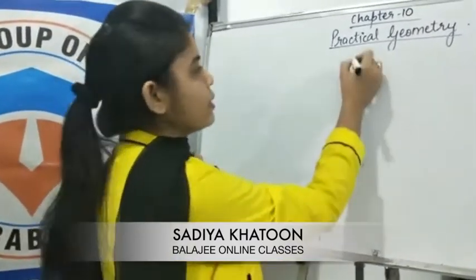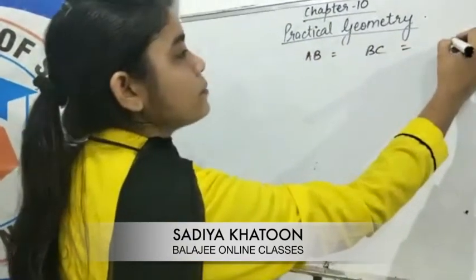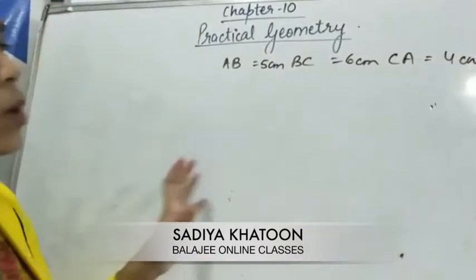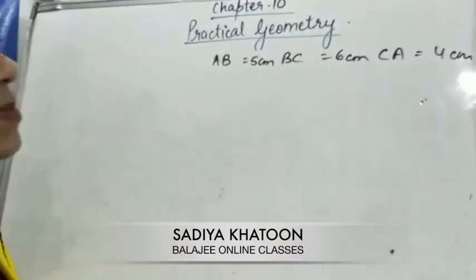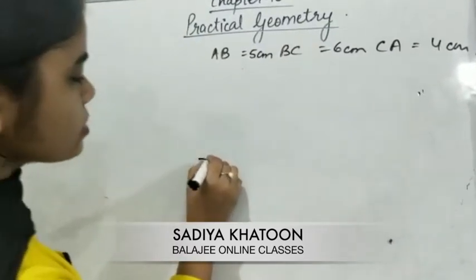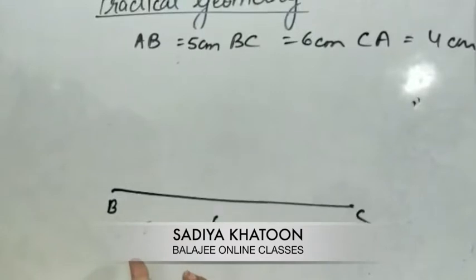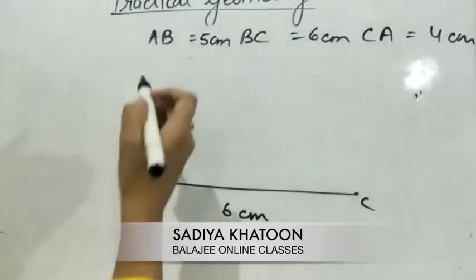Next we will study the construction of triangles. Triangles can be constructed based on the information given to you. Sometimes all three sides of the triangle are given — that is SSS, side-side-side. In that case, you pick one side as the base. For example, in triangle ABC with AB = 5 cm, BC = 6 cm, and CA = 4 cm, you draw BC = 6 cm as the base using a ruler.